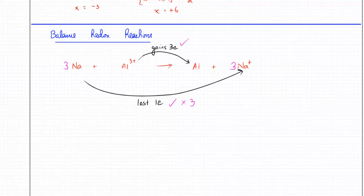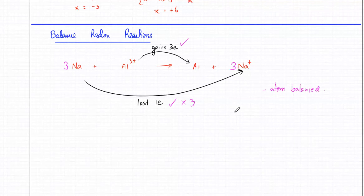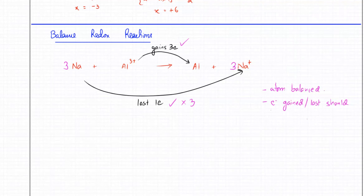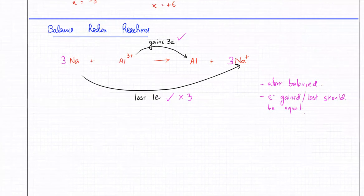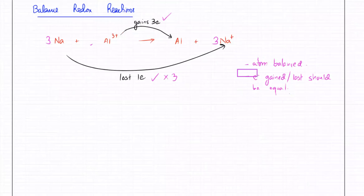Remember: an equation has to be balanced atom-wise — the number of atoms must be balanced, that's one thing. And the other thing is that electrons gained and lost must be equal as well. They should always be equal. So whenever you see a redox equation, the number of electrons gained and lost must be equal at all costs.